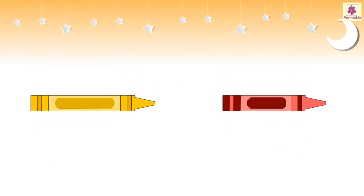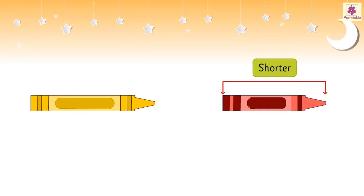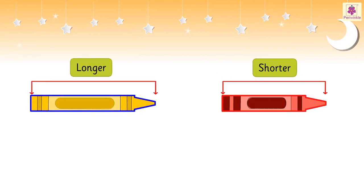Similarly, here the red crayon is shorter than the yellow crayon. Or we can say that the yellow crayon is longer than the red crayon.